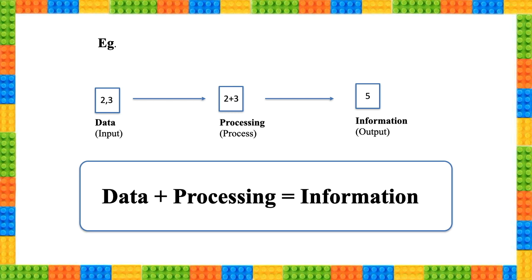For example, let's see we have numbers 2 and 3. What are the numbers 2 and 3? Are they representing anything? No, we don't know what they represent. When we apply a process, for example in our case we are applying addition, we will get 5, which is information that after the addition of 2 and 3 we get 5 as output.